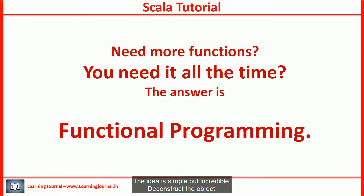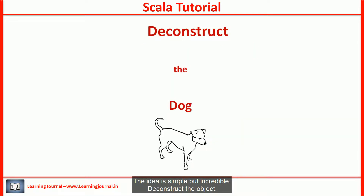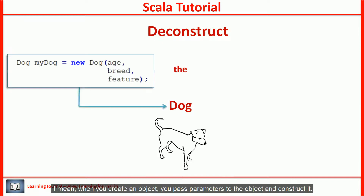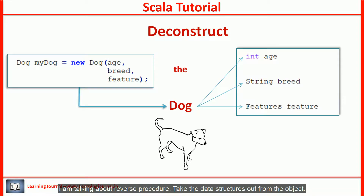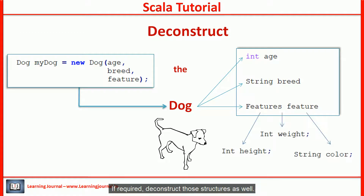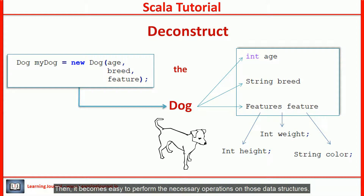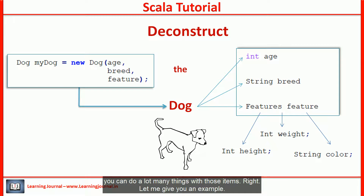Pattern matching gives you an alternative to handle this problem. The idea is simple but incredible: deconstruct the object. When you create an object, you pass parameters to construct it. The reverse procedure is to take the data structure out from the object — deconstruct it — then it becomes easy to perform the necessary operations on those data structures. In layman's language, if you can open a box and take individual items out, you can do a lot of things with those items.